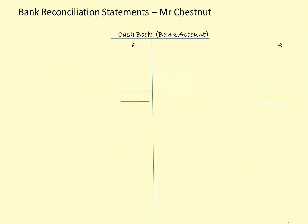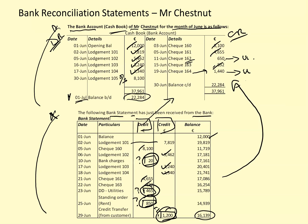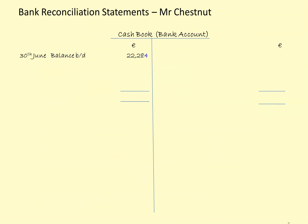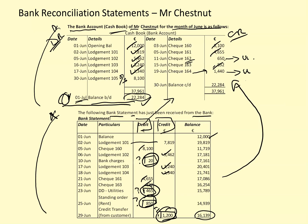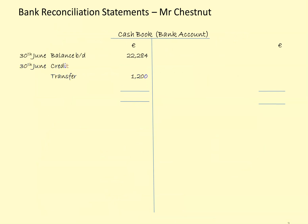Here is the updated cash book. I need to put in the balance — the closing balance at the end of June becomes the opening balance on the 1st of July. This 1,200 represents money that has been transferred into his account from a customer that Mr. Chestnut had not recorded, so we need to put that in: 1,200 on the debit side of Mr. Chestnut's account.